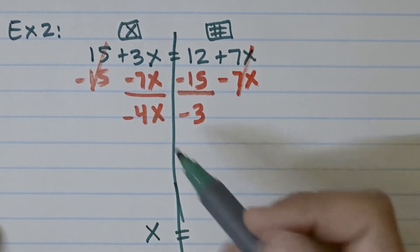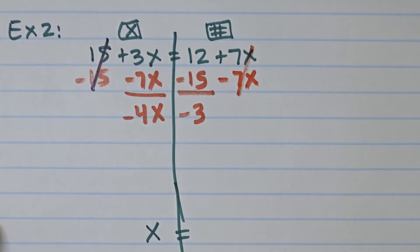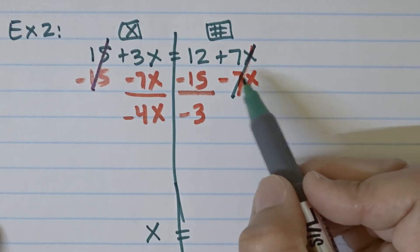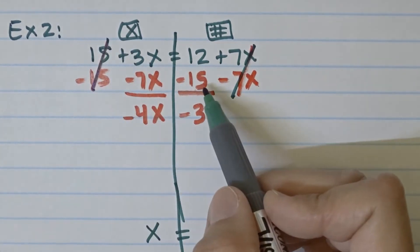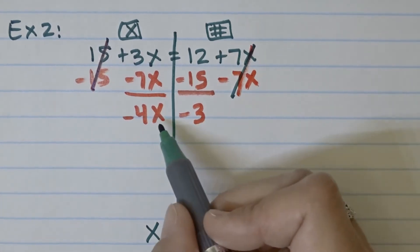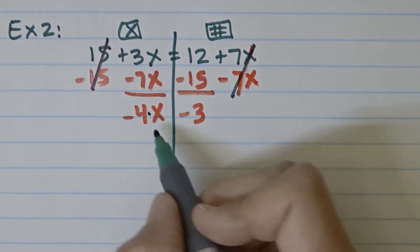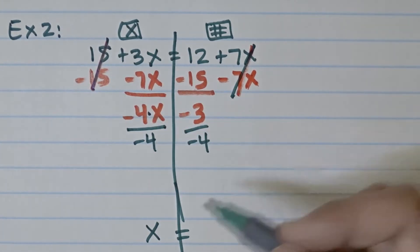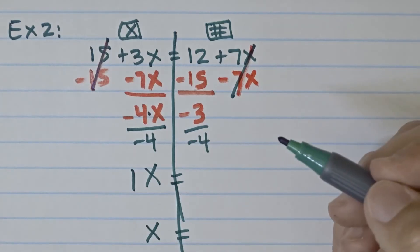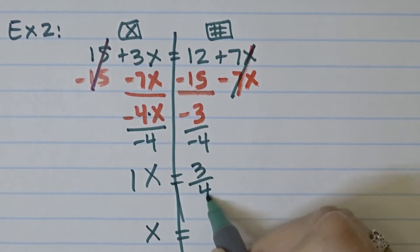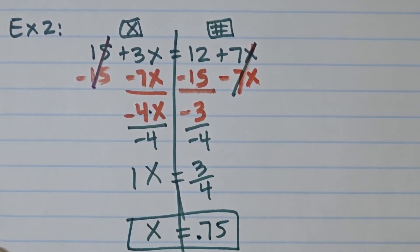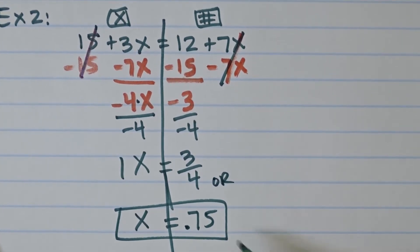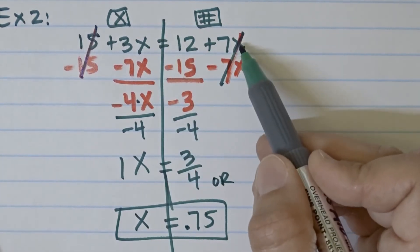We got rid of both out-of-place terms. When you moved the 15, a negative 3 ended up on the right; when you moved the 7x, a negative 4x ended up on the left. Now it's a one-step equation: divide both sides by negative 4. Negative 4 divided by negative 4 gives 1x, and negative 3 divided by negative 4 is positive three-fourths, or 0.75. Both forms are acceptable answers.